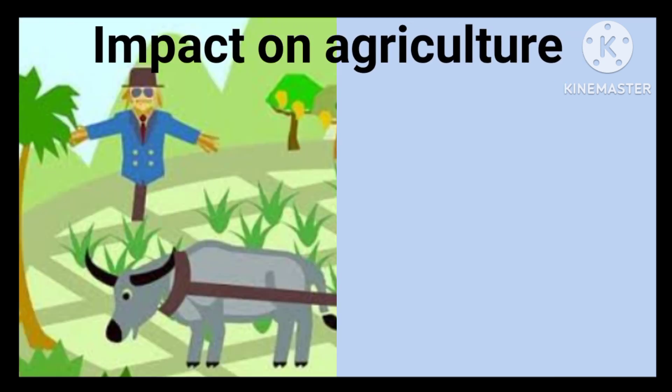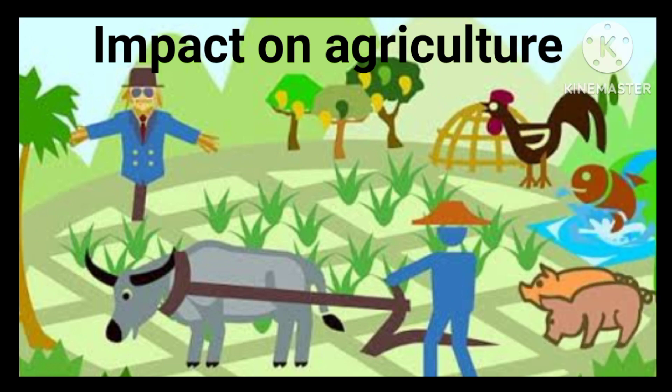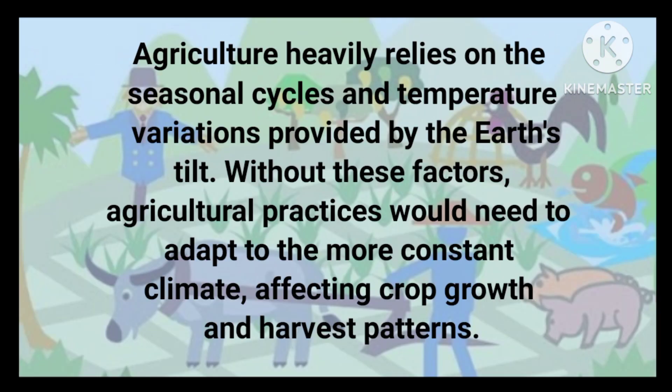Agriculture heavily relies on the seasonal cycles and temperature variations provided by the Earth's tilt. Without these factors, agricultural practices would need to adapt to the more constant climate, affecting crop growth and harvest patterns.